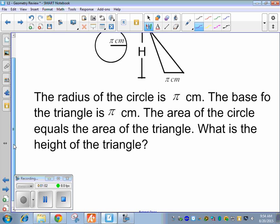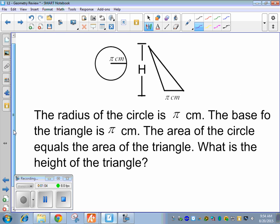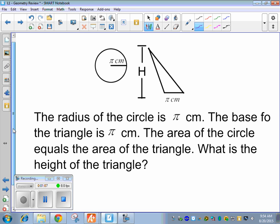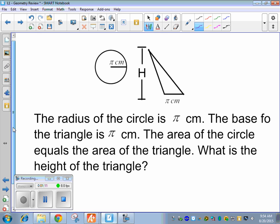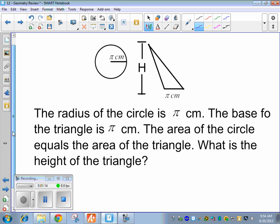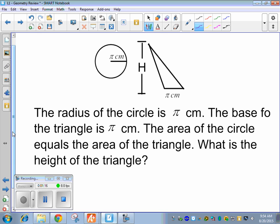Alright, so here we have a problem. We have the radius of a circle is pi centimeters, and the base of the triangle is pi centimeters. The area of the circle equals the area of the triangle. What is the height of the triangle? So let's start with the formulas. So we've got the area of a circle, which equals the area of a triangle.